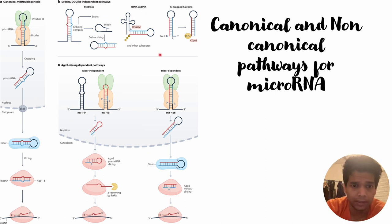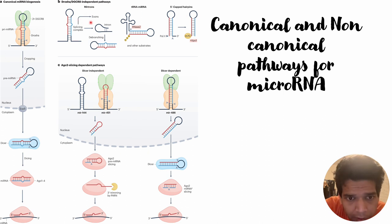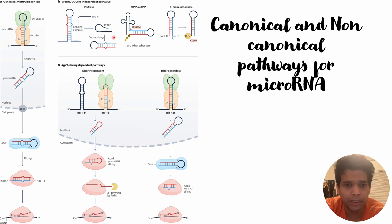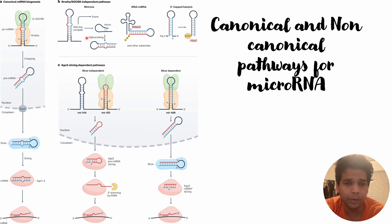Now let us understand how the non-canonical pathways work. There are different kinds of micro RNAs that can be formed through non-canonical pathways. The first type is called mitrons — in this case, because of the debranching of the intron and the splicing mechanism within the nucleus, this kind of micro RNA is formed, as shown here.